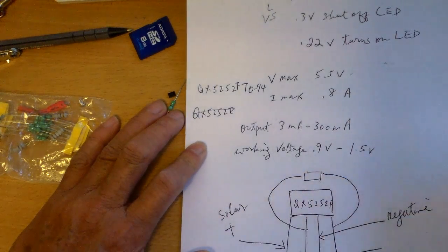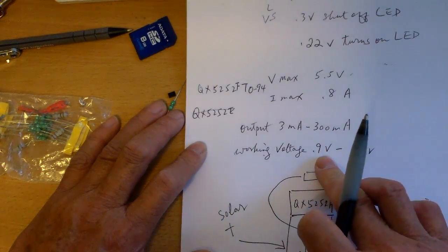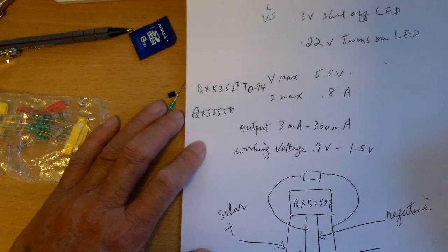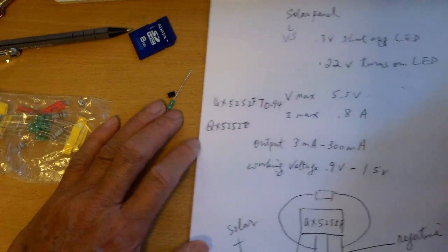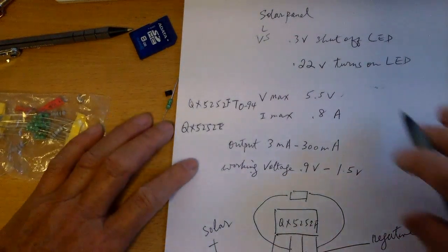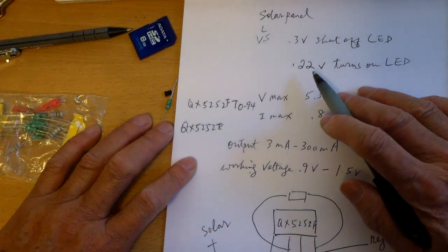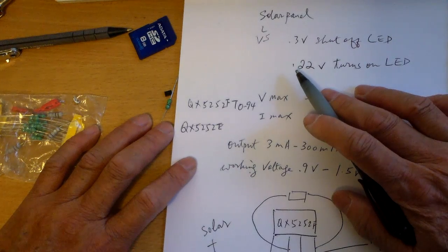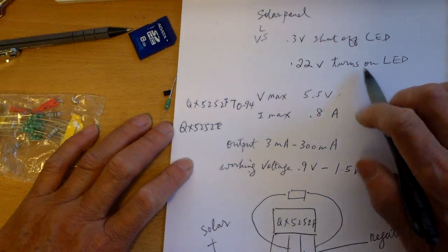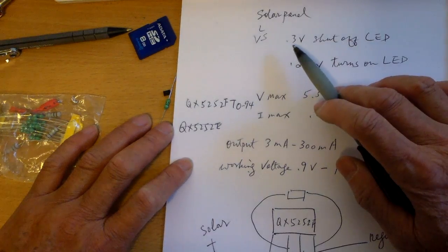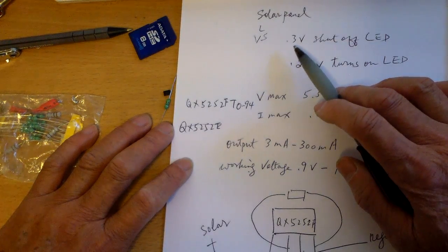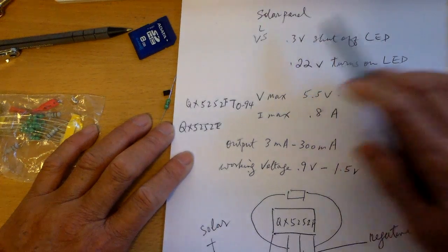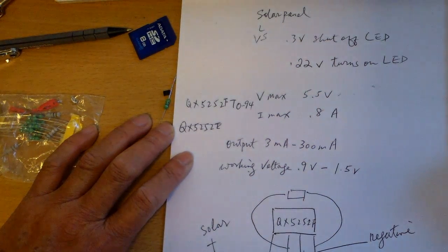The working voltage is 0.9 volts to 1.5 volts. That means if your battery goes below 0.9 volts, it'll shut off your solar light. The turning on of the solar light is when your solar panel voltage is below 0.22 volts. It turns on the LED. When it senses that the voltage is 0.3 volts, it shuts off the LED.